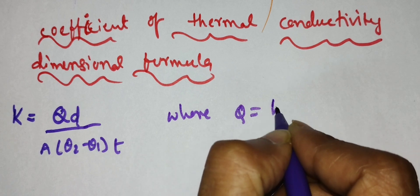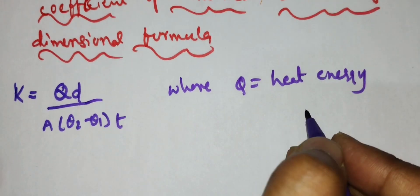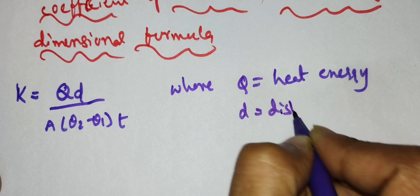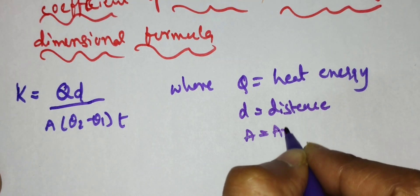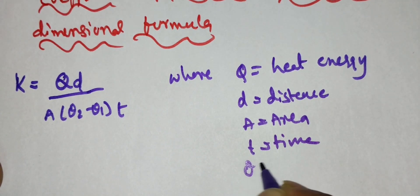So here it is where Q is heat energy and D is distance between the two ends of the conductor which is carrying the heat. And A is area of the conductor, and theta 2 and theta 1 is the temperature, theta 2 minus theta 1 is the temperature difference. Small t is time.